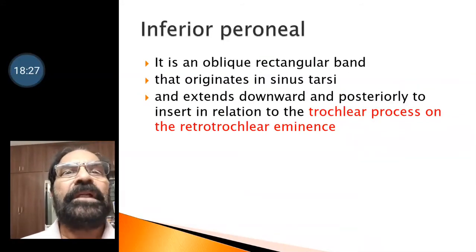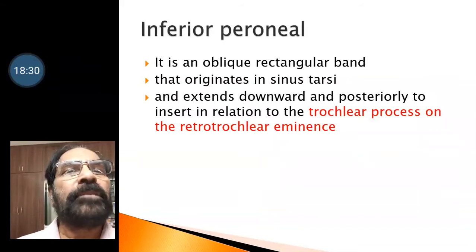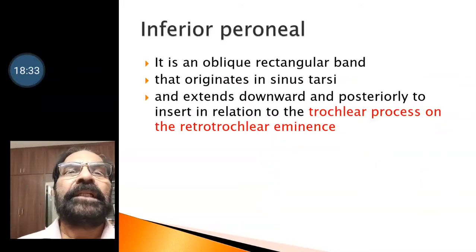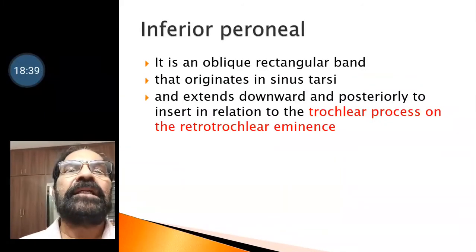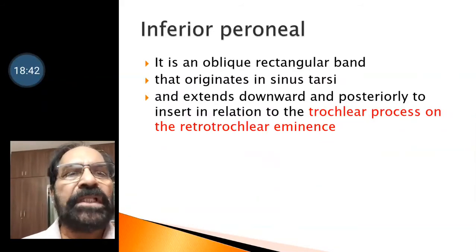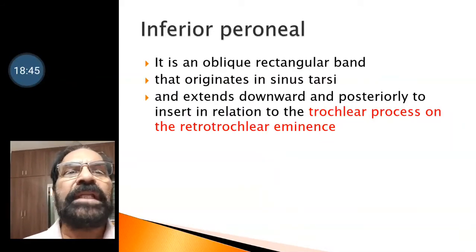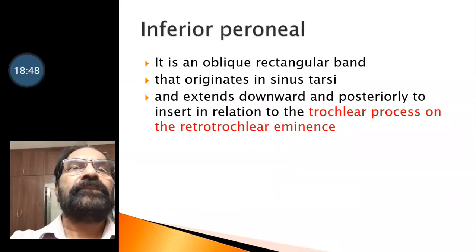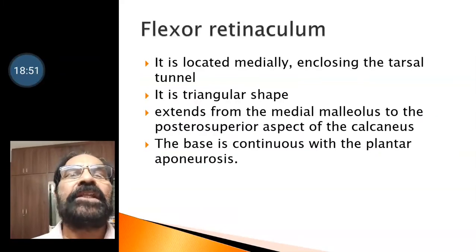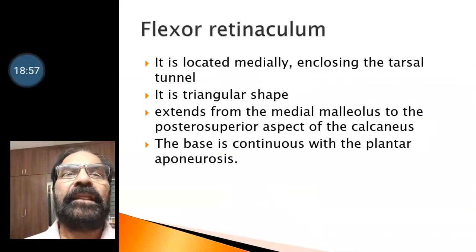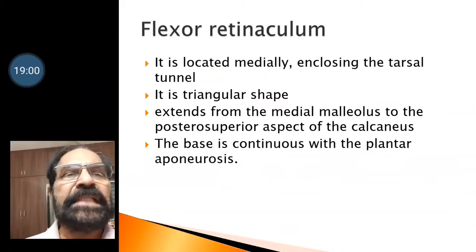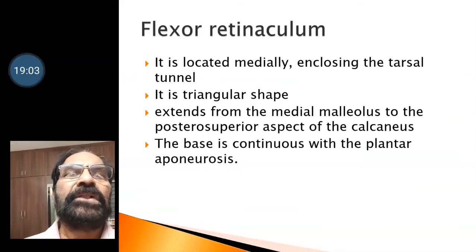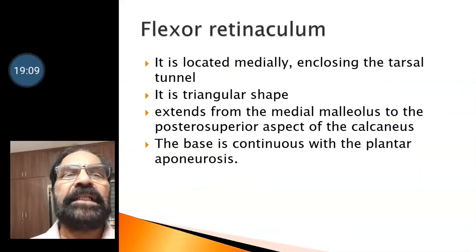The inferior peroneal retinaculum is an oblique rectangular band. It originates from the sinus tarsi and extends downwards and posteriorly to get inserted in relation to the trochlear process on the retrotrochlear eminence. Then we go to the flexor retinaculum. It is located medially, enclosing the tarsal tunnel. It is triangular in shape and extends from the medial malleolus to the posterior superior aspect of the calcaneus. The base is continuous with the plantar aponeurosis.